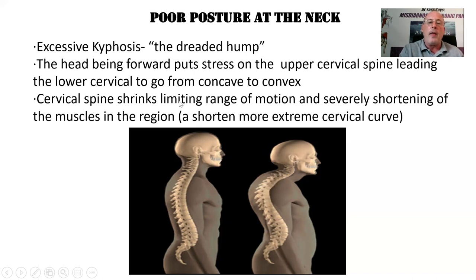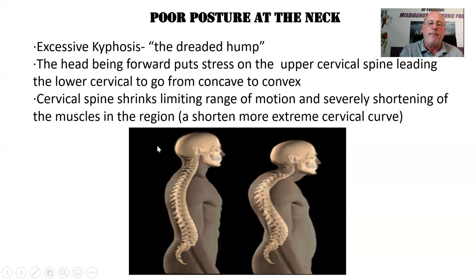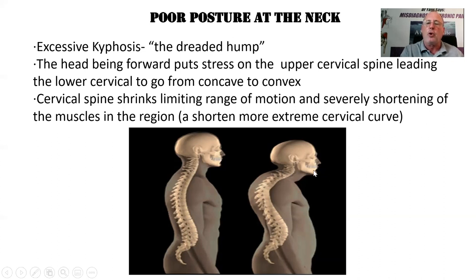The cervical spine shrinks, limiting range of motion. A person with a normal spine can move their head back using all seven vertebrae. But with only three or four vertebrae available, the muscles are shortened, and simply trying to move the head back will likely cause those muscles to strain — leading to neck pain. This is why you see a major loss of range of motion and pain with any level of neck motion.